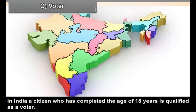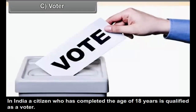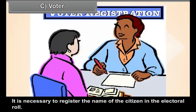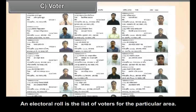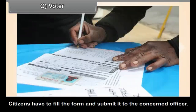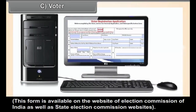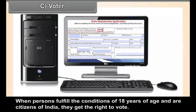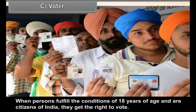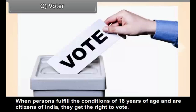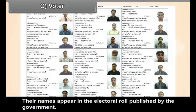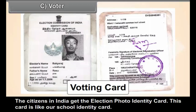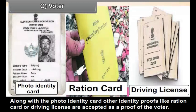Voter: In India, a citizen who has completed the age of 18 years is qualified as a voter. It is necessary to register the name of the citizen in the electoral roll, which is the list of voters for a particular area. Citizens have to fill the form and submit it to the concerned officer. This form is available on the website of Election Commission of India as well as State Election Commission websites. When persons fulfill the conditions of 18 years of age and are citizens of India, they get the right to vote and their names appear in the electoral roll. Citizens in India get the election photo identity card. Along with it, other identity proofs like ration card or driving license are also accepted as proof of the voter.